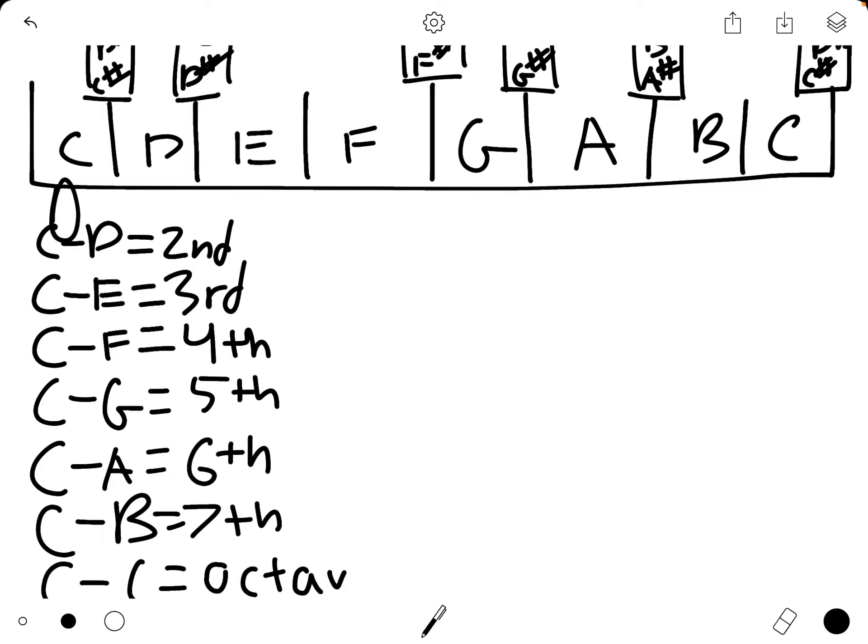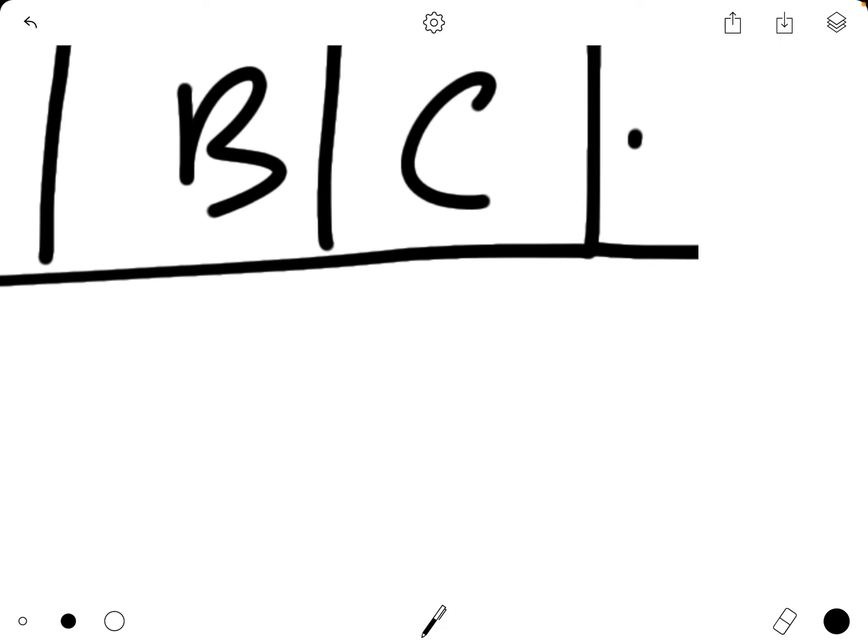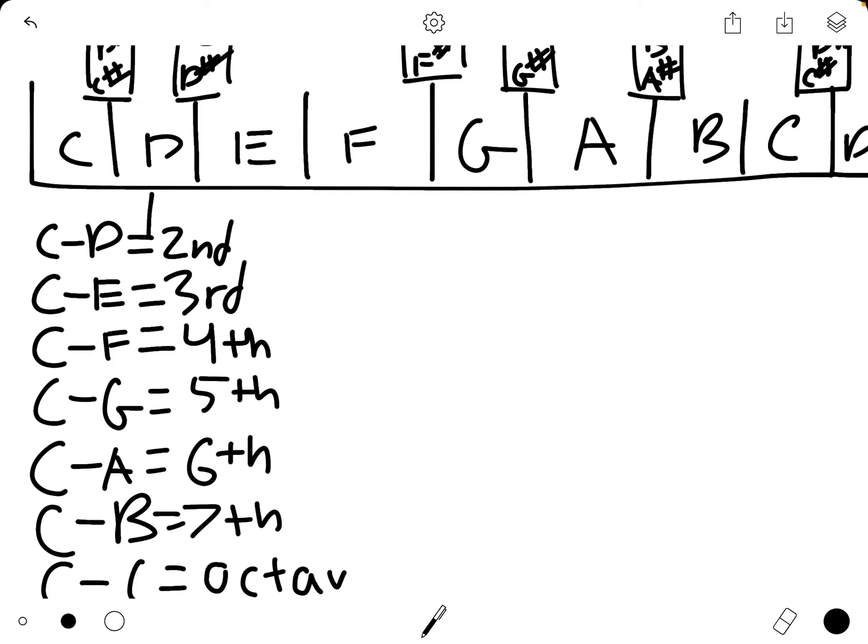So that can be the kind of weird thing. You start on one. You don't start on zero. One, two, three, four, five, six, seven, eight to create C to C, which is an octave. If we had an extra note all the way over here where we went to the D note, that would be one, two, three, four, five, six, seven, eight, nine.